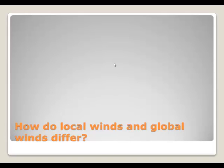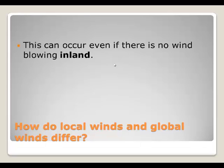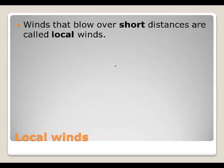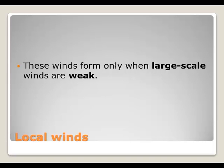How do local winds and global winds differ? On a summer day, we usually have a nice breeze that comes off of a beach or from the water onto the land, even if there is no wind inland. This is an example of a local wind — local winds are winds that blow over short distances. This is due to the unequal heating of Earth's surface within small areas, usually due to temperature differences between land and water. These winds only form when large-scale winds are weak.